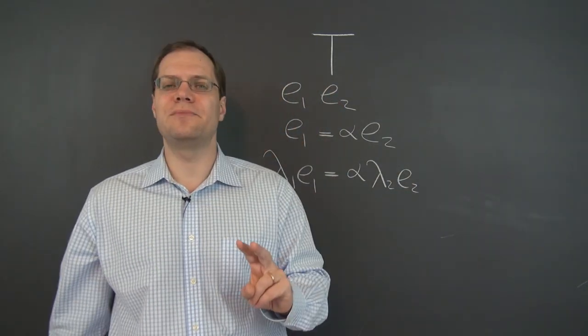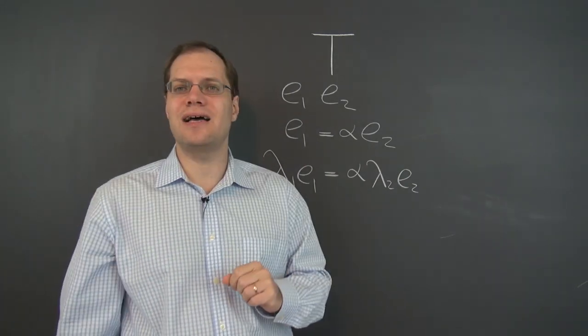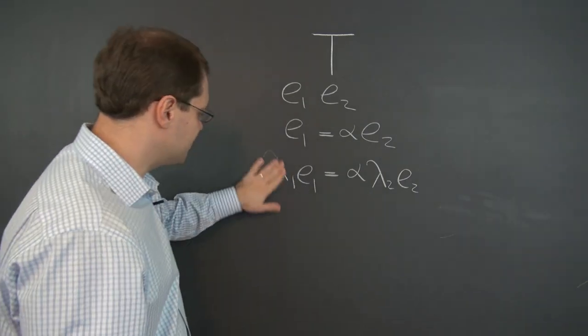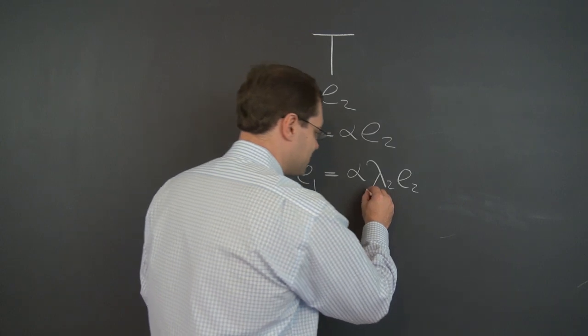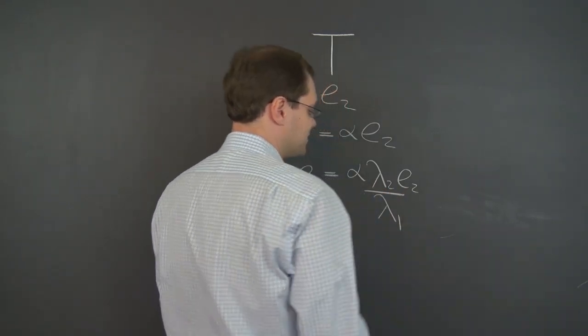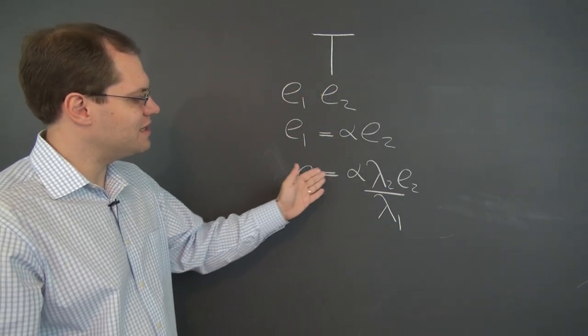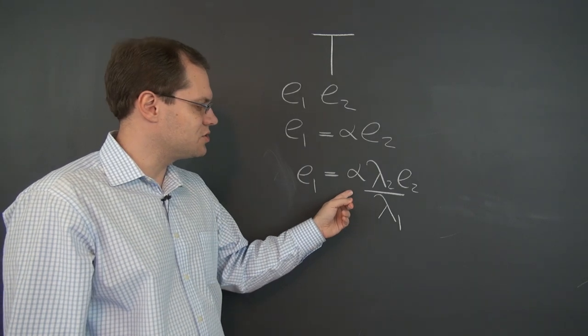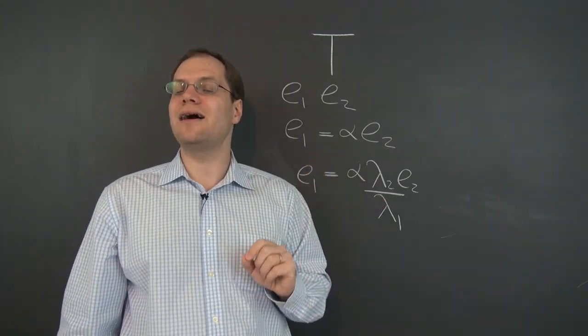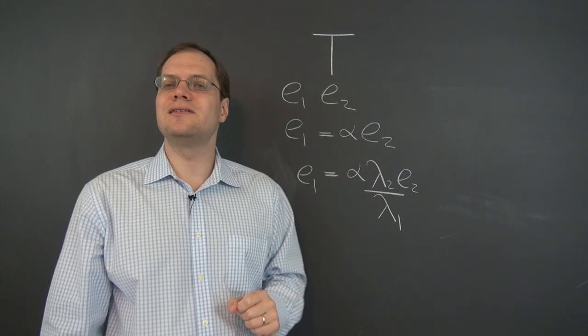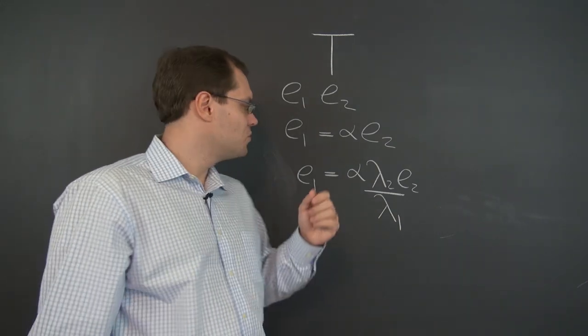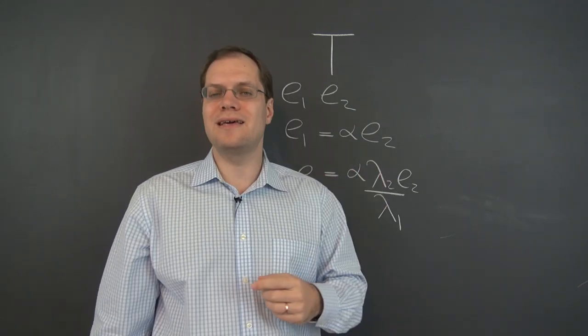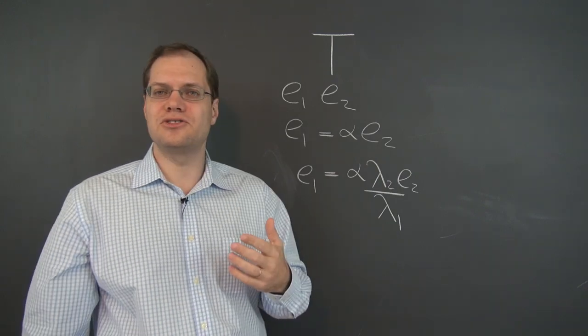Now there are two possibilities. Either lambda 1 is zero or it's not zero. Let's consider the case of not zero first. And if it's not zero, we can divide both sides by lambda 1, which I will do in this rather violent fashion. And now we have that E1 equals this multiple of E2. And this multiple is not, once again, alpha, because lambda 2 does not equal lambda 1. So then which one is it? Is E1 alpha E2 or is E1 this more complicated multiple of E2? So we have a contradiction.